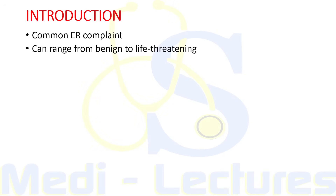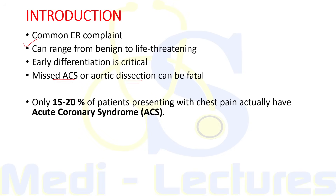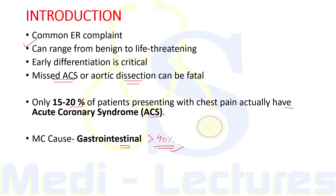We are discussing this topic because chest pain is a common ER as well as OPD complaint, and it can range from benign to life-threatening causes; therefore, early differentiation is critical. Missed acute coronary syndrome or aortic dissection can be fatal. Only 15 to 20 percent of patients who present with chest pain actually have acute coronary syndrome. The most common cause of chest pain is gastrointestinal causes, responsible for more than 40 percent of cases.